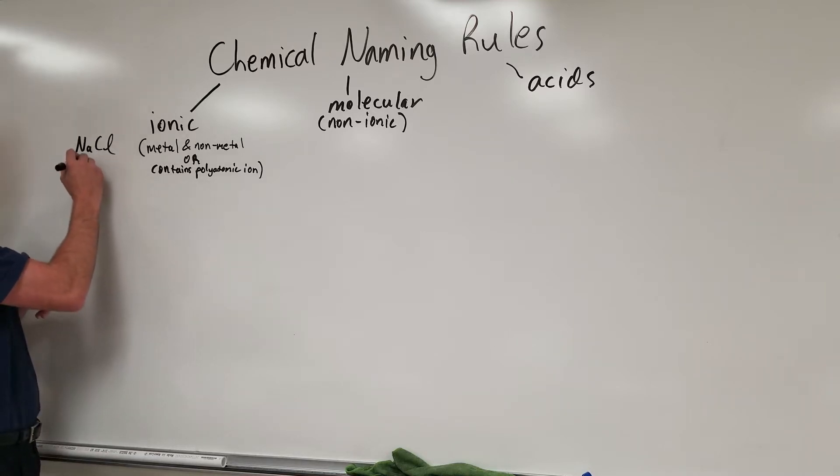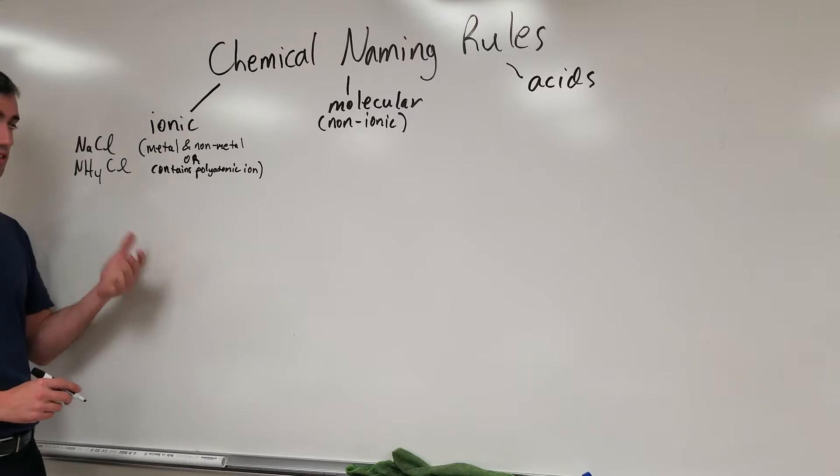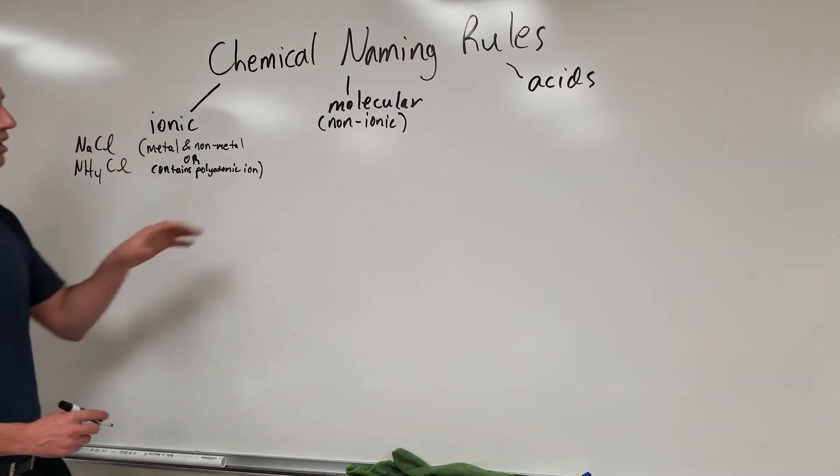A polyatomic ion, that'd be for example like NH4Cl, which would be a polyatomic ion plus a non-metal. There's no metals present, but nonetheless, even though it's all non-metals, because there's a polyatomic ion present, you'd say this is an ionic compound.